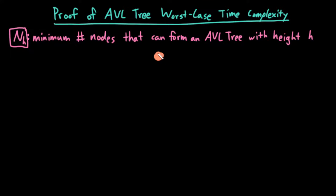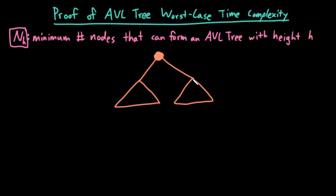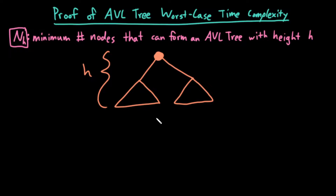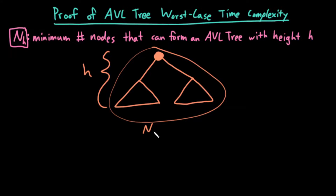So in other words, let's imagine I have an AVL tree — here's the root. The root has some left subtree and some right subtree. Each of these subtrees could either be empty, have one node, or many nodes. If this AVL tree has height h, I want to minimize the number of nodes that can form it. This tree would have n sub h nodes by definition — it's the smallest number of nodes that an AVL tree of height h could have.